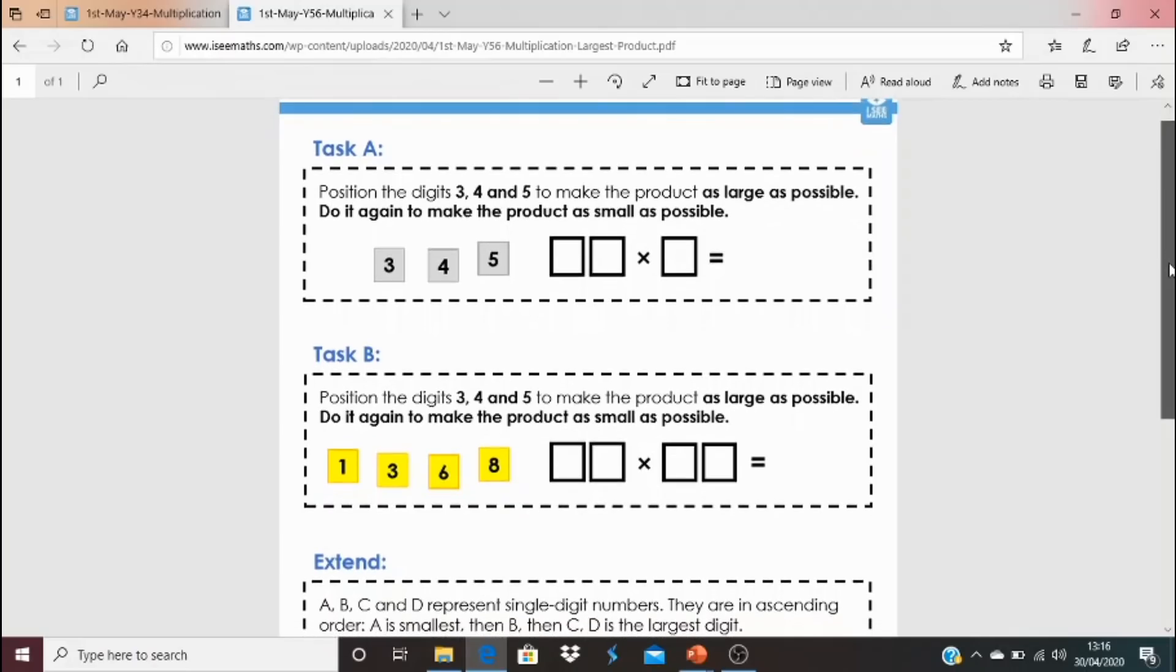Task B is similar, except this time we've got four digits and it's a two-digit number multiplied by a two-digit number. Have a think. Do you want those numbers to be relatively close together or further apart? Where do you put the larger digits, the smaller digits? Have a think about that one. For these calculations, if you need to use a calculator to do the actual calculating, if that's necessary, then do that. But really think about and how you can explain which will give the larger product, which will give the smaller product and why.